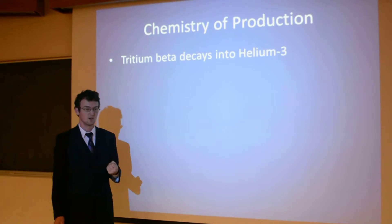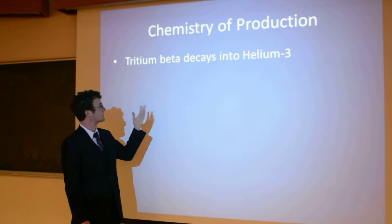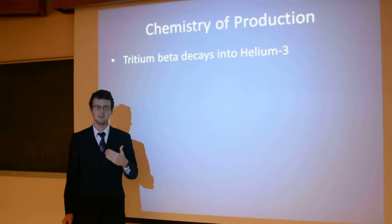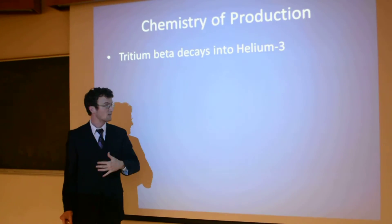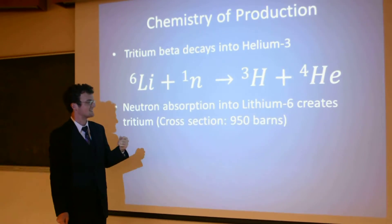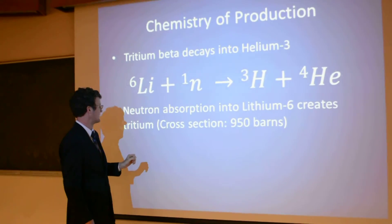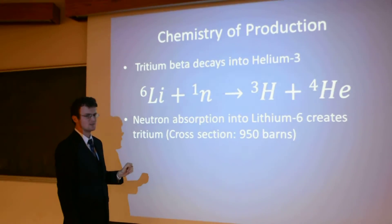And while it is very difficult to create it directly, we can indirectly create it by creating tritium and having it beta decay into helium-3. That reaction is this: neutron absorption into lithium-6. And that would create a tritium atom and a helium-4 atom with a cross-section of 950 barns.